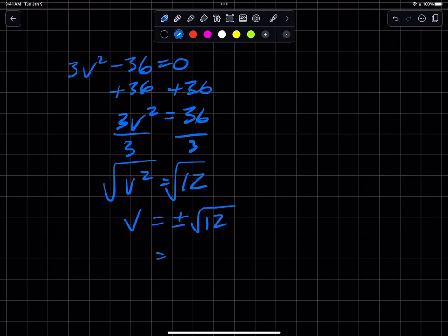And of course, if we simplify that, we get plus or minus the square root of 4 times the square root of 3, which is plus or minus, square root of 4 is 2. And so I get that.